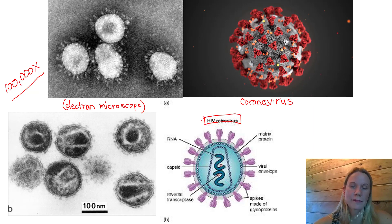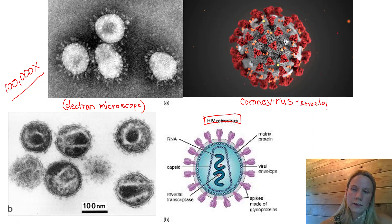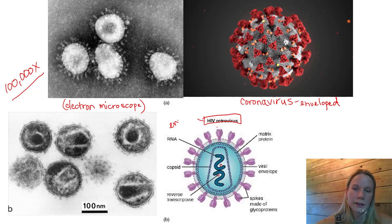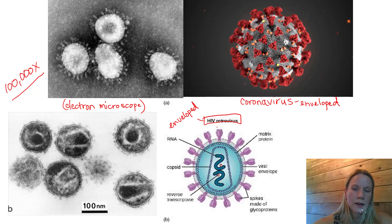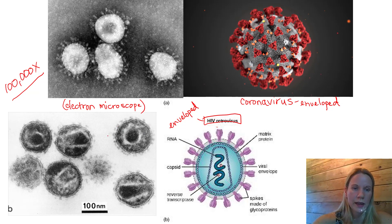These are all enveloped - that's what I'm trying to show you. So coronavirus is enveloped. HIV is enveloped. And again you can see little halos of spikes. HIV also has little halos of spikes around it.